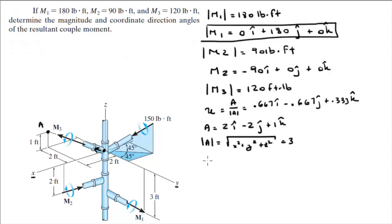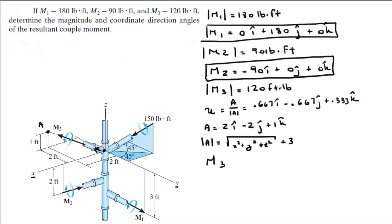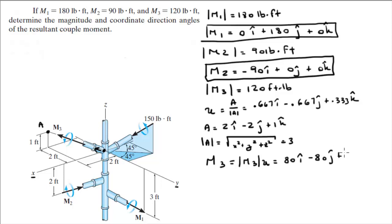Now that we have the unit vector, the Cartesian vector form of M3 is equal to the magnitude of M3 times the unit vector, which comes out to be 80i - 80j + 40k.